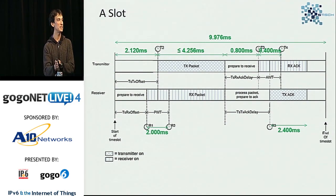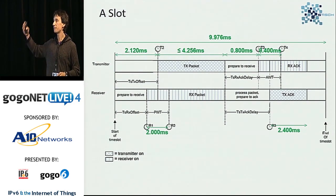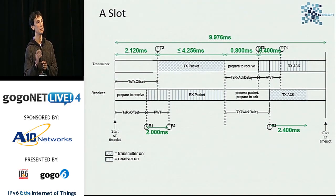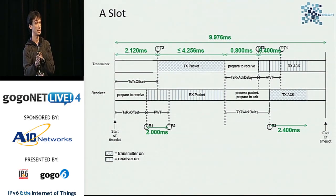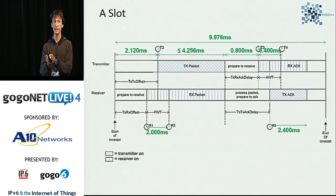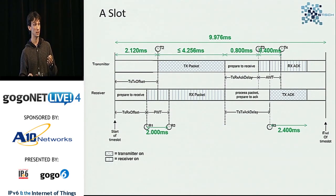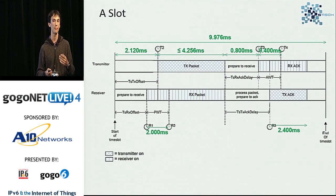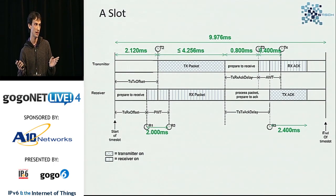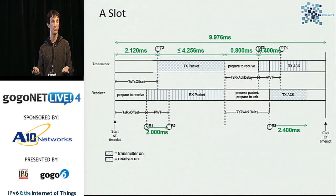15.4E defines other mechanisms like keep-alive and beacons to maintain network synchronization. How fast the network desynchronizes depends on the hardware crystals. You can buy expensive temperature-compensated crystals and nodes will hardly ever desynchronize, or you can use cheap crystals and need to synchronize more frequently.